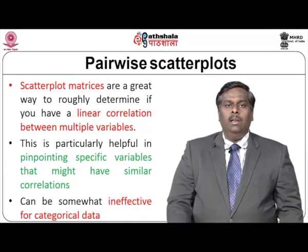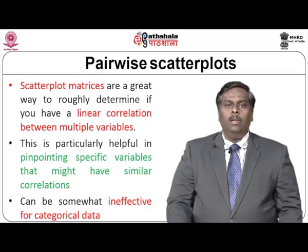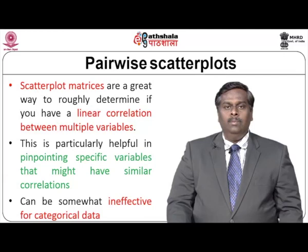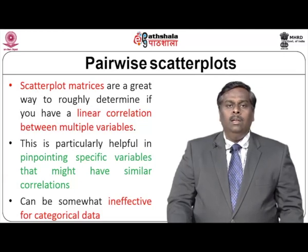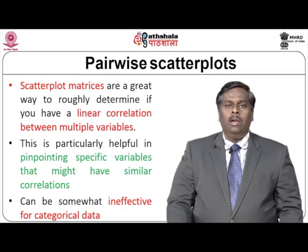The first type of visualization technique used for visualizing more than two variables is the pairwise scatter plot. This is similar to a scatter plot, but instead you have a matrix of scatter plots which highlights linear correlations between multiple variables. We have multiple pairwise combinations of variables and generate multiple scatter plots for each combination. This is particularly helpful in pinpointing specific variables that might have similar correlations. Pairwise scatter plots work very effectively for numerical data.